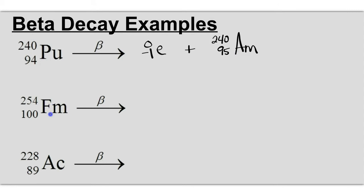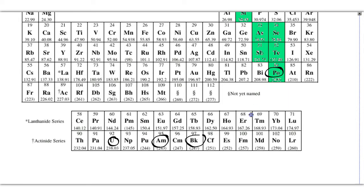254 over 100 FM. And that's going to give us a beta particle, plus 254 over 101, and 101 is mendelevium.